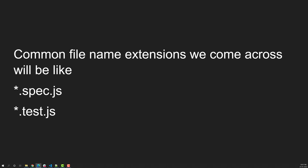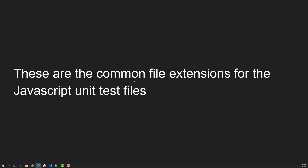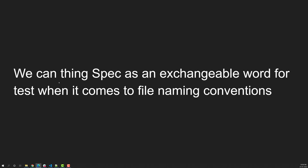Commonly, in JavaScript projects, you'll find two file name extensions: star.spec.js and star.test.js. These are the most common naming conventions for JavaScript unit test files. Here, 'star' represents the file name, while .spec.js or .test.js is the extension.